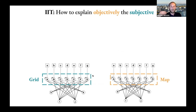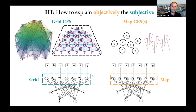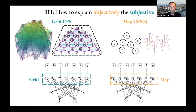How can we go beyond this and objectively explain the subjective properties? The proposal of IIT is that instead of focusing on representational or functional properties, we must focus on cause-effect power — the intrinsic causal powers the systems actually specify. We can unfold the cause-effect structure of each system, focusing on the middle layer, which has feedback connections and loops. For the grid, we find a rich cause-effect structure that, for just seven units, has more than 70 distinctions and many relations between them. The map, by contrast, trivially disintegrates into seven separate systems that specify only a small amount of causal power and do not interact with each other.